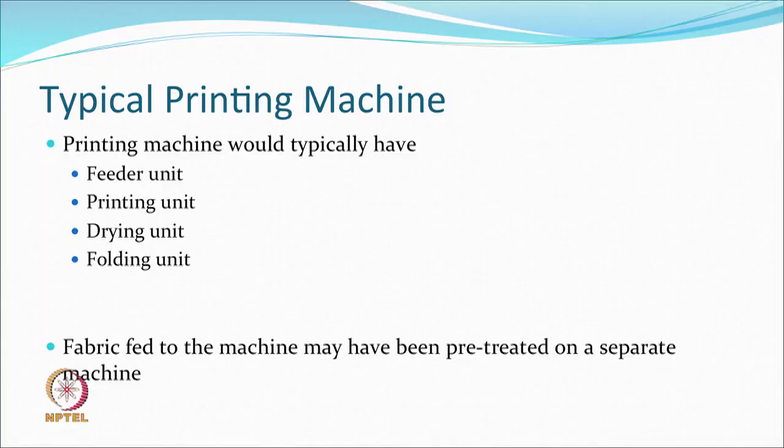Looking at the printing machine as a whole: a typical machine has a feeder unit, a printing unit, and drying and folding. This is the digital printing part. Pre-treatment of the fabric may be done on a separate machine before feeding. Lightweight, knitted, piled, or hairy fabrics may need pre-treatment so that the surface becomes smooth and dimensions are controlled — preventing skewing and design distortion. The feeder unit controls tensions and conveys the fabric into the machine correctly.